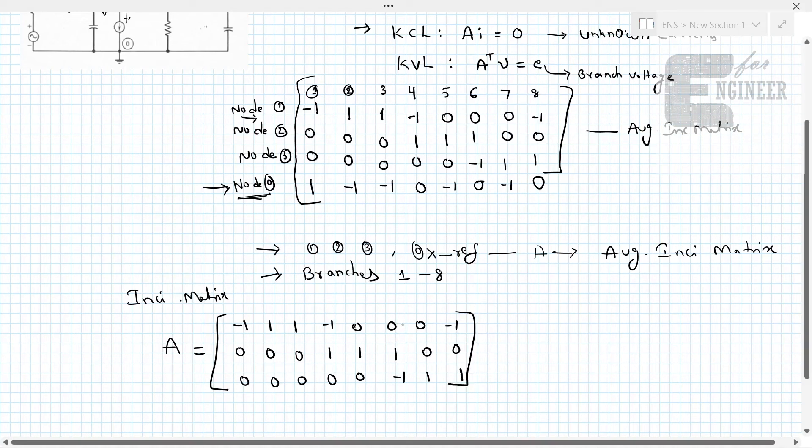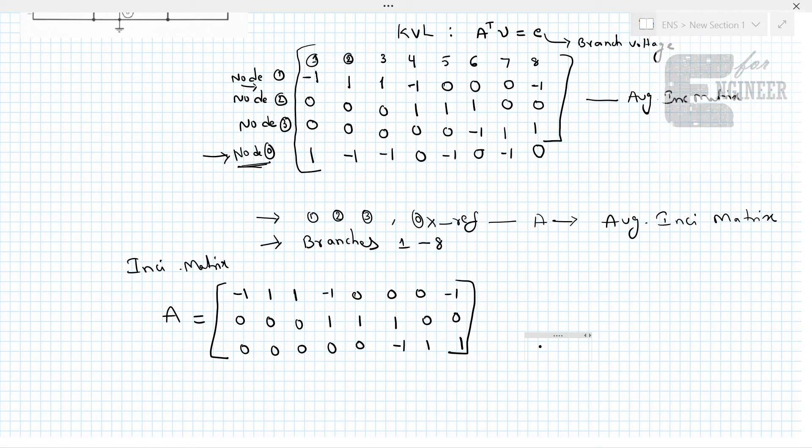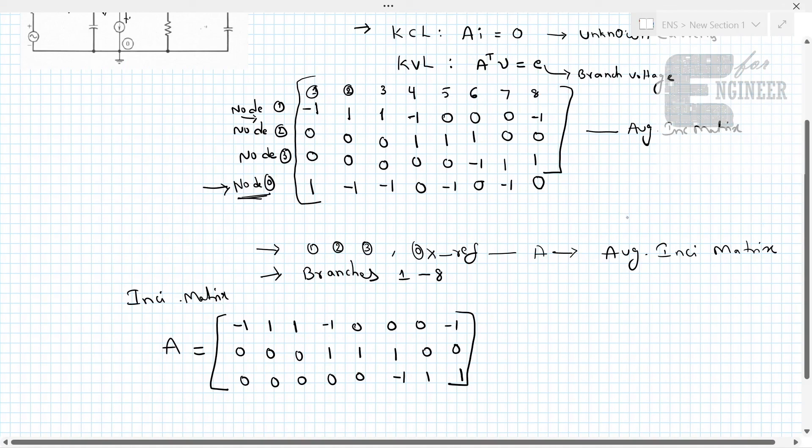This is how we write the incident matrix of a particular network. Please find this problem and the solution which I have explained in our website e4engineer.com. The link is given in the video description. Thank you for watching. For more content like this, please subscribe to e4engineer.